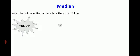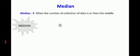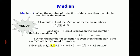Next topic is median. Median. Median is when the number of data is odd, then the middle number is the median. For example, find the median of these numbers: 1, 2, 3, 4, 5. Here, 3 is the median. Median is 3 because 3 is the middle of this set.